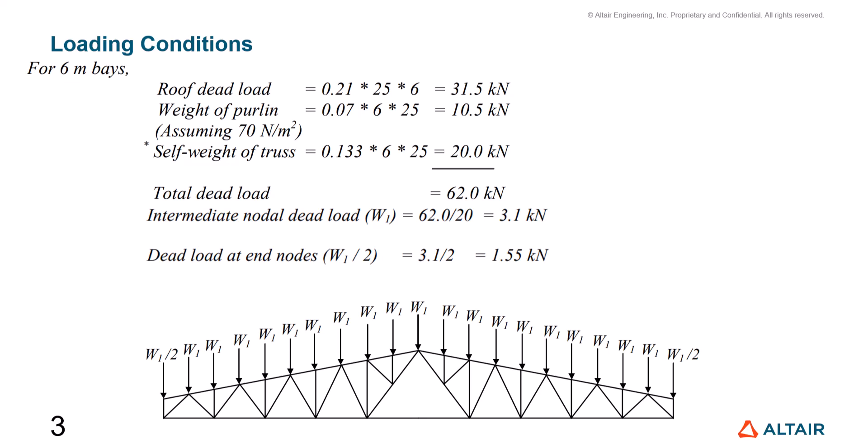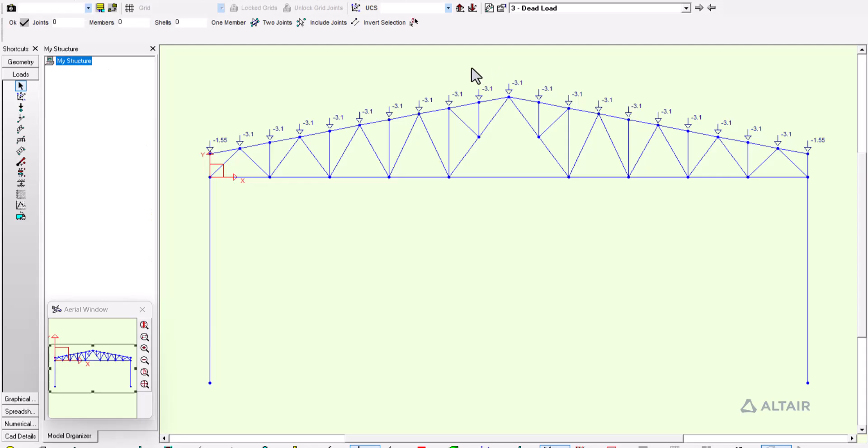When we take that total dead load and divide it among our 20 bays, we're going to have the intermediate nodal dead loads, or W1, of 3.1 kilonewtons. The dead load at the end nodes is W1 divided by 2, so 1.55 kilonewtons. We have represented that loading condition in our model with 3.1 kilonewtons acting downwards and 1.55 kilonewtons at the end joints.